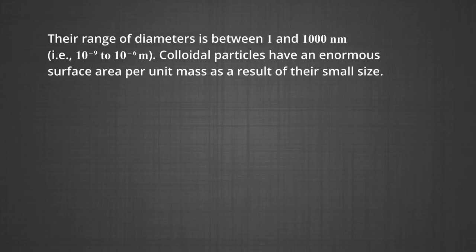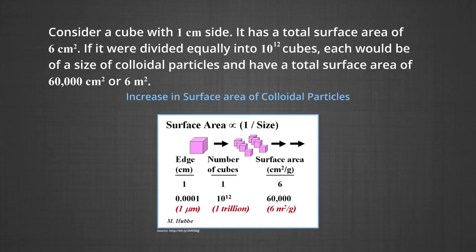Colloidal particles have an enormous surface area per unit mass as a result of their small size. Consider a cube with 1 centimeter size — it has a total surface area of 6 cm². If it were divided equally into 10¹² cubes, each would be of the size of colloidal particles and have a total surface area of 60,000 cm² or 6 m². This enormous surface area leads to some special properties of colloids. It is important to bear in mind that a colloid is not a mere substance, but it is the state of the substance which depends upon its particle size.